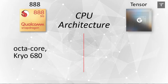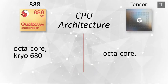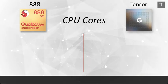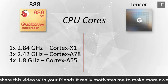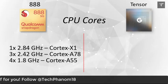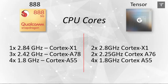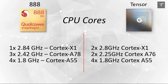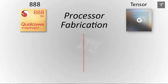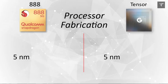Moving towards the CPU architecture, both processors are octa-core, though it's not fully specified for the Google Tensor. The Snapdragon 888 uses Kryo 680 cores: one Cortex-X1 at 2.84 GHz, three mid-performance cores at 2.42 GHz, and four efficiency cores at 1.8 GHz Cortex-A55. The Google Tensor takes a different approach with two high-performance cores at 2.8 GHz, two cores at 2.25 GHz, and four Cortex-A55 cores at 1.8 GHz. Both processors are built on 5nm fabrication, delivering flagship performance and better battery efficiency.